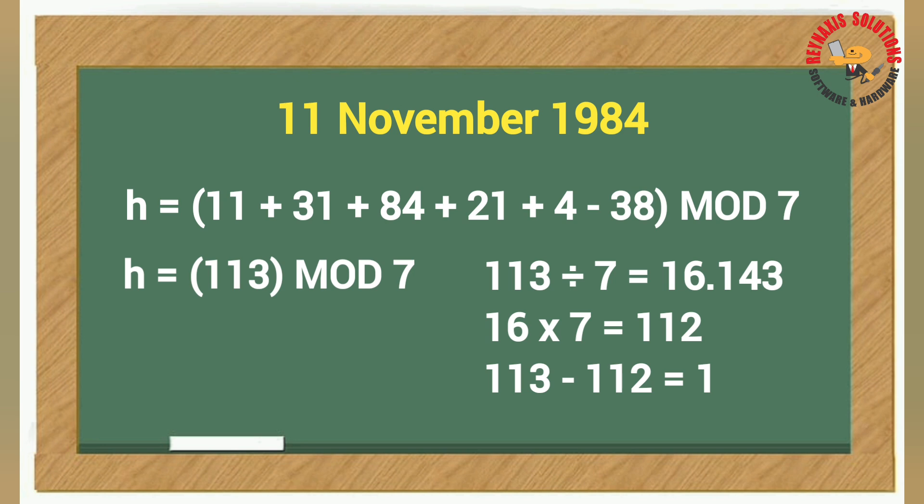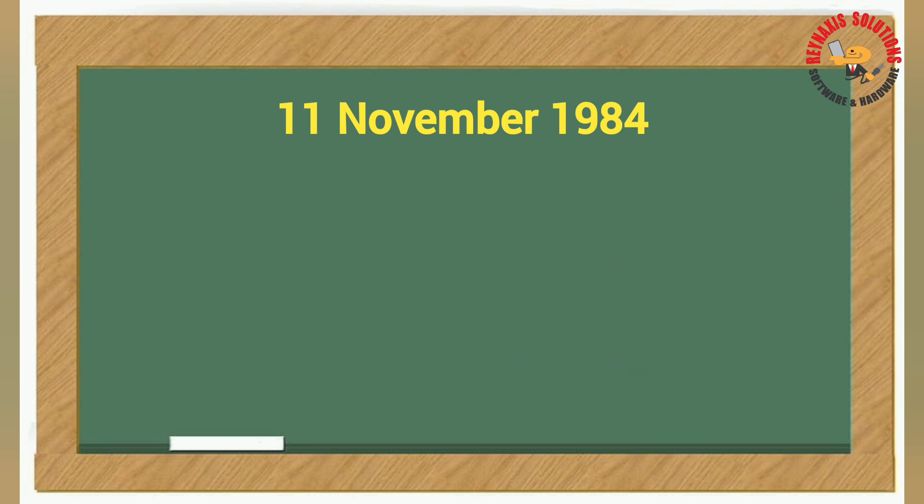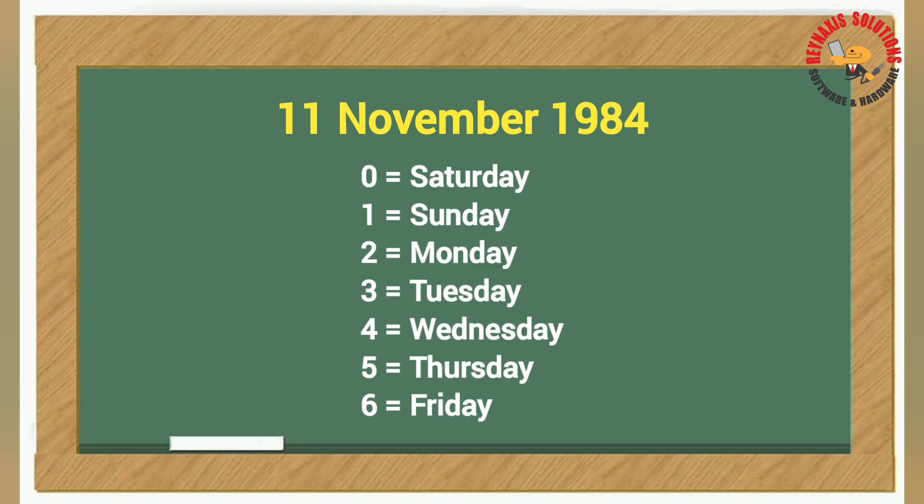To do that manually, divide 113 by 7 and get the integer part which is 16. Multiply that by 7 to get 112, deduct 112 from 113 and you'll get the final answer which is the number 1. Find the number 1 from the list shown on the chalkboard and you'll see the corresponding day of the week for November 11, 1984, and that will be Sunday.